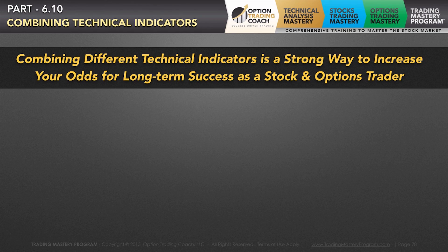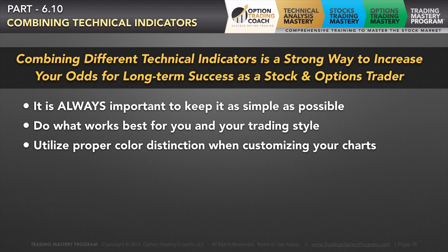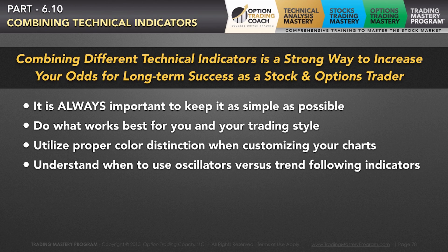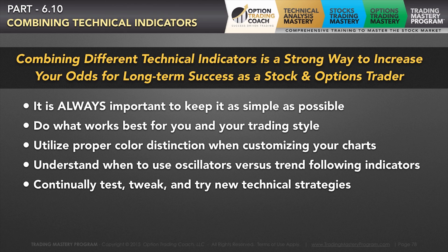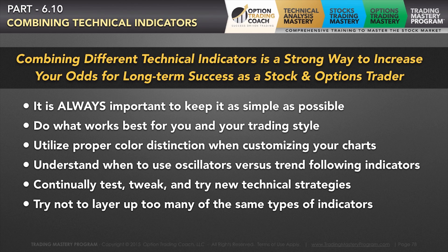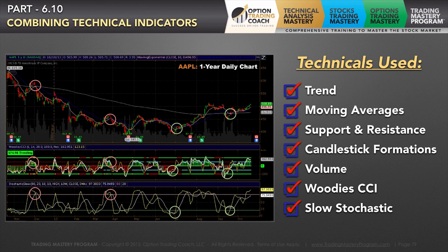Combining different technical indicators is a very strong approach that will help increase your odds for both short-term and long-term success as a stock and options trader. Proper distinction will help you understand when to use oscillators like stochastics and RSI versus trend-following indicators like MACD and the directional movement indicator. The market's always evolving — what might work this year might not work in five years. Always be in that present opportunity flow, be open to change, and try not to layer up too many of the same types of indicators, so you can continually stack the odds in your favor.